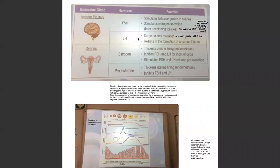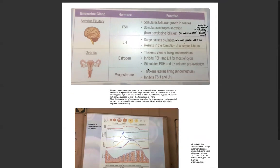A surge in LH causes ovulation and causes the Graafian follicle to rupture, and LH results in the formation of a corpus luteum. Estrogen, secreted in the ovary by the developing follicle and by the corpus luteum, thickens the uterine lining, inhibits FSH and LH for most of the cycle, and stimulates FSH and LH just before ovulation.